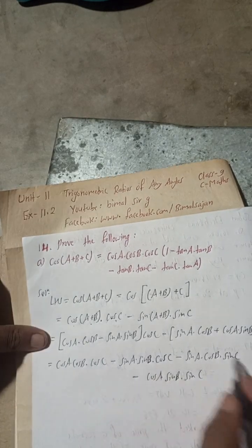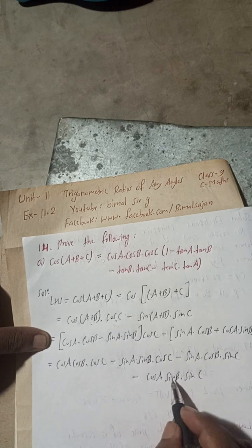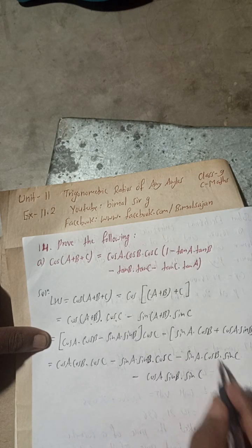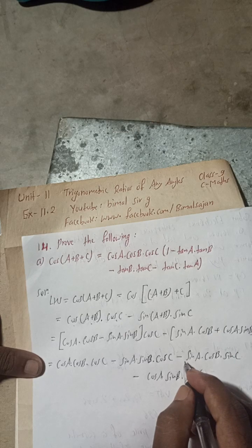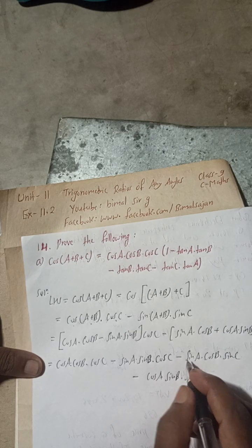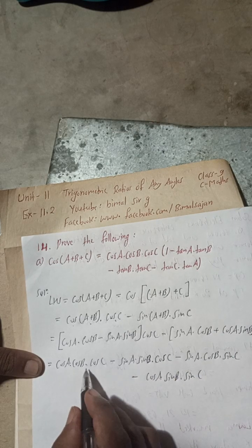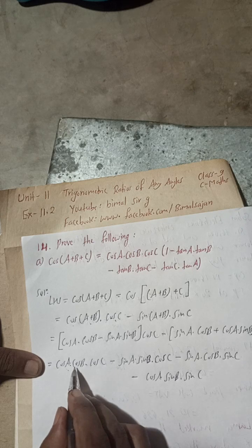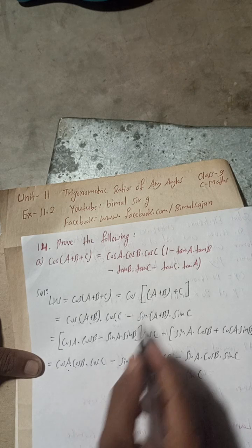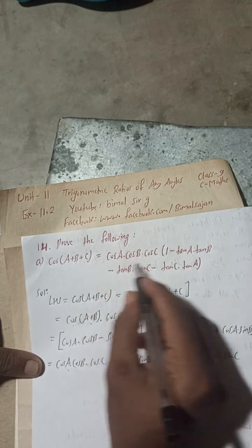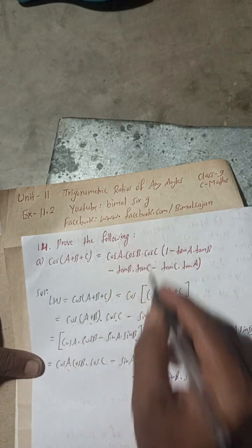Now we organize these four terms. We can see what is common here. We need to take cosA·cosB·cosC as a common factor, because that is what we need to prove according to the RHS.